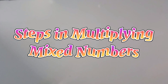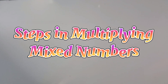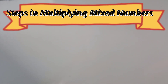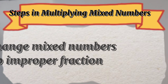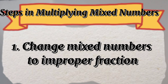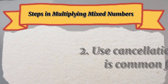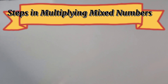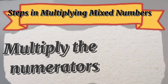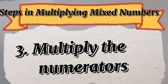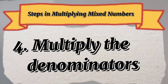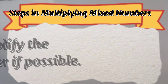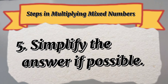There are steps in multiplying mixed numbers. First, change mixed numbers to improper fraction. Next, use cancellation if there is a common factor. Third, multiply the numerators. Next, multiply the denominators. And the last one, simplify the answer if possible.